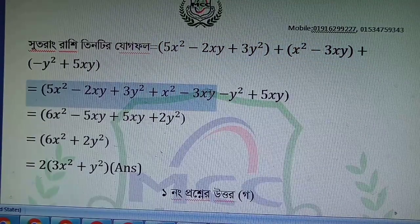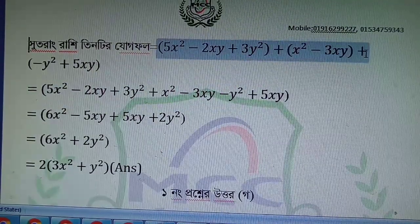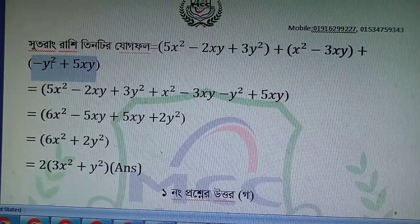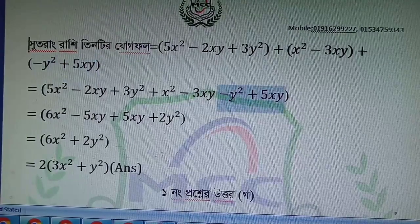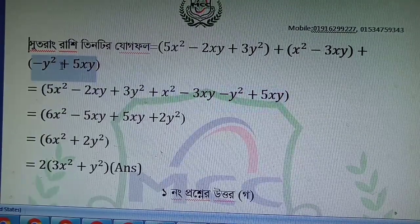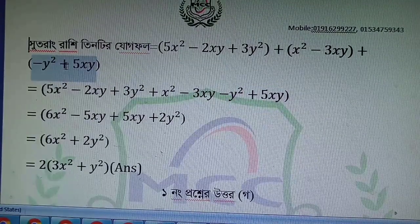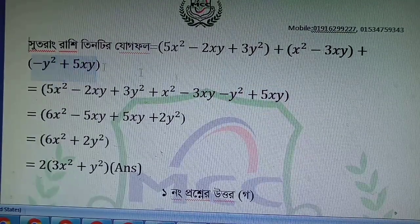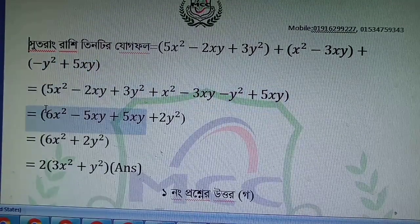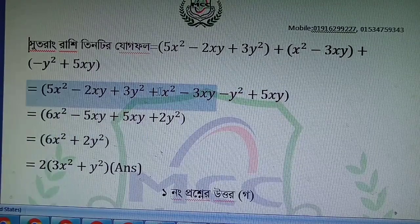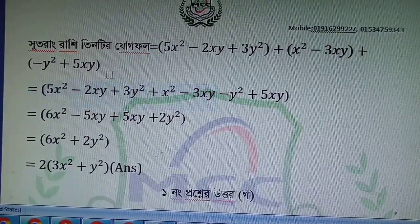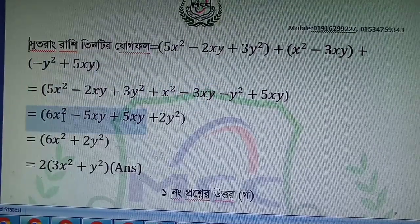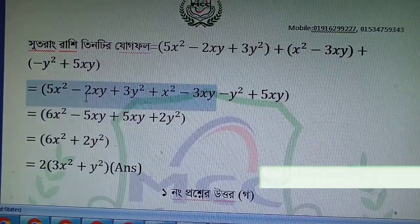Minus 3xy, plus minus y², plus 5xy. Now I'm going to add 5x² and x², giving 6x².